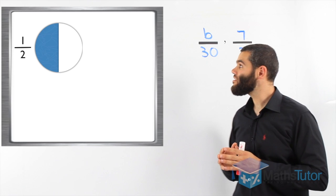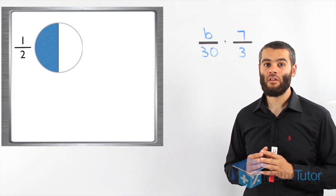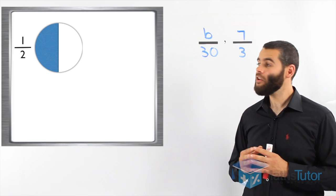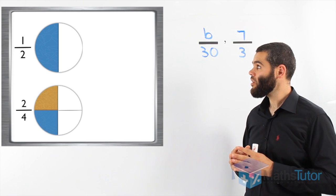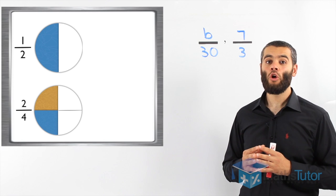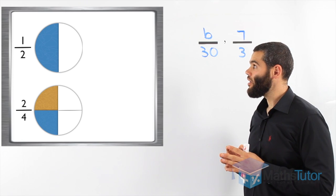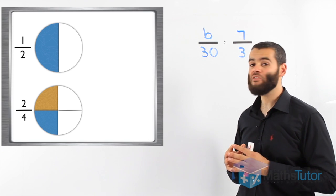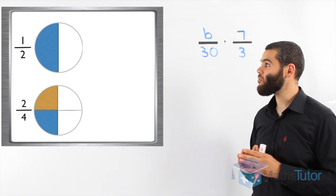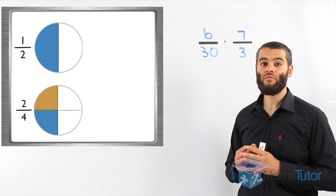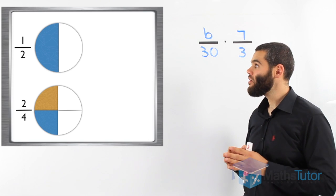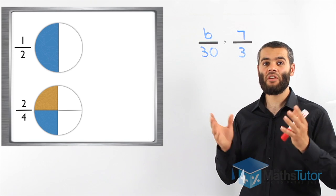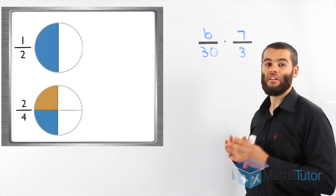Looking at this circle, we can see that half of it has been shaded, meaning one out of the two parts has been shaded. Look at the next diagram. This circle has four parts. Two of the four have been shaded. If you notice, the same amount has been shaded in the top circle and in the bottom circle. However, they are written differently. So that means 1 over 2 has the same value as 2 over 4 — just written differently, but the same value has been shaded.